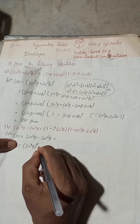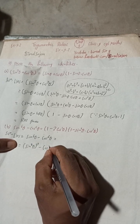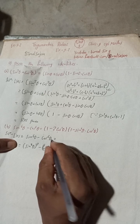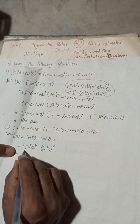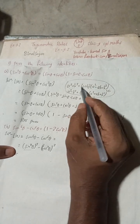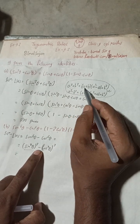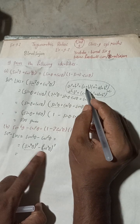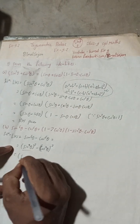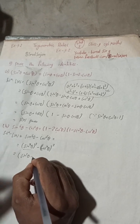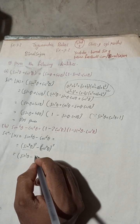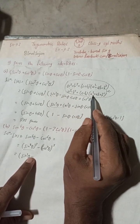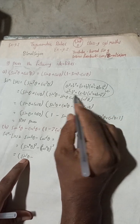So sin⁶θ = (sin²θ)³ and cos⁶θ = (cos²θ)³. Now here this is 'a' and this is 'b'. The formula for a³ minus b³ is equal to (a − b)(a² + ab + b²). I will use this formula, where a = sin²θ and b = cos²θ.